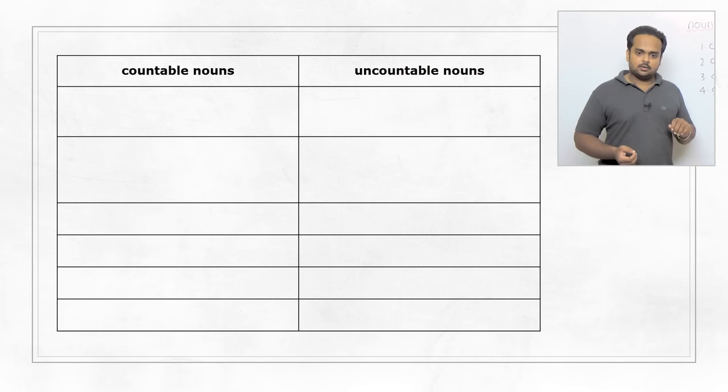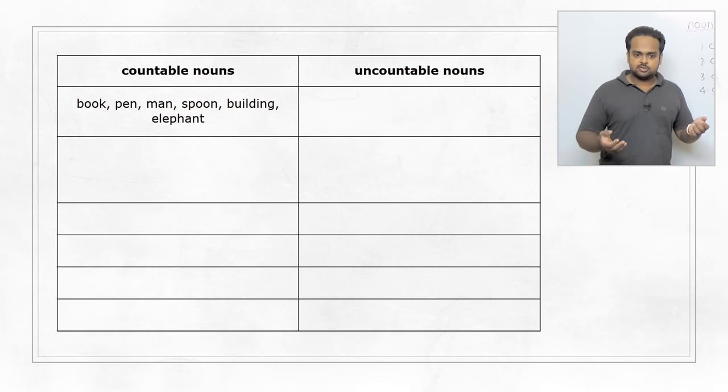Some common countable nouns are book, pen, man, spoon, building, elephant, etc. With all of these, we can use numbers or plurals to talk about them. We can say two books, five pens, three buildings, etc. If there's only one, we can use a or an. I have a book, there's an elephant standing over there, etc.